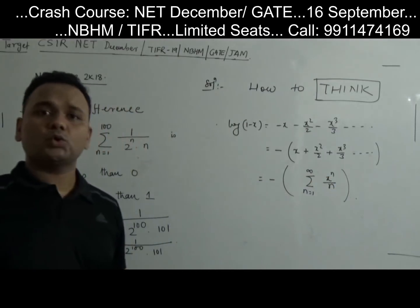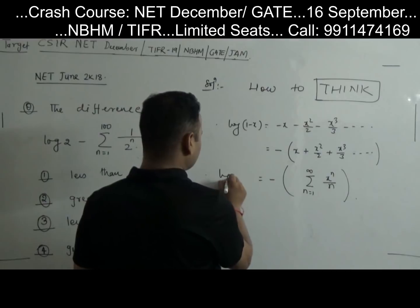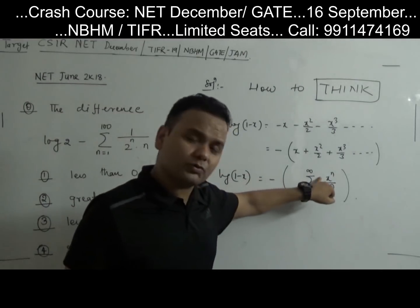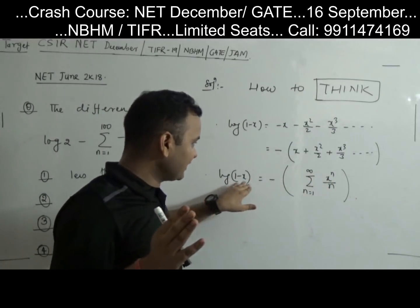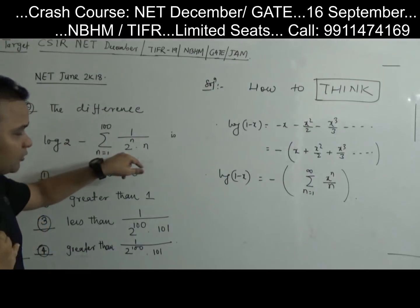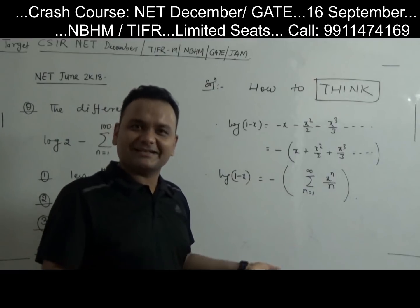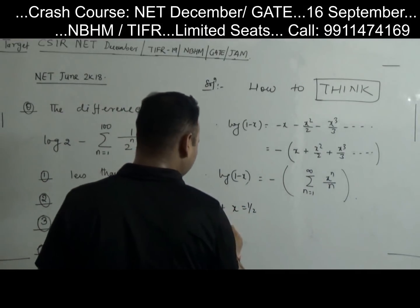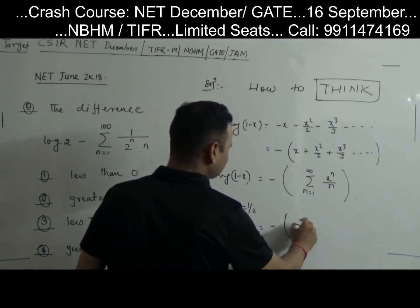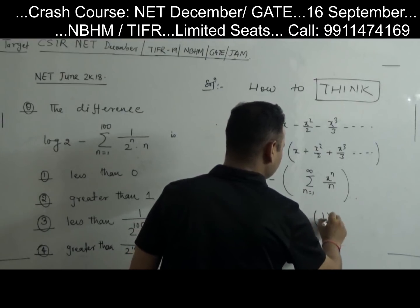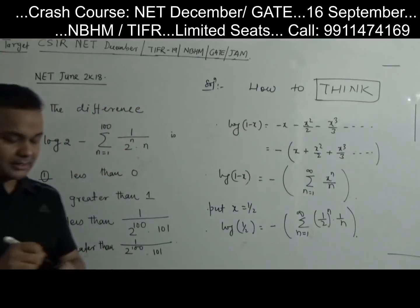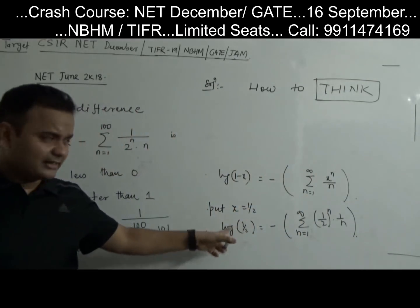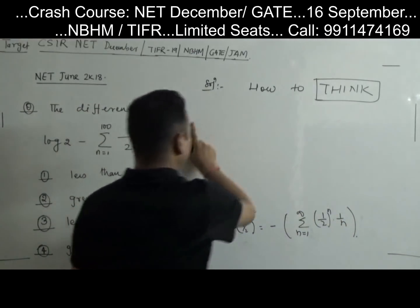So log(1−x) equals minus the sum of x^n/n, n from 1 to infinity. Now I need to go from this to log 2 using 1/2. Put x equal to 1/2. So log(1 − 1/2) equals log(1/2) equals minus the sum from n=1 to infinity of (1/2)^n times 1/n. Log(1/2) is minus log 2. So log 2 equals the sum from n=1 to infinity of 1/(2^n · n). Here is the clear pattern of how we have used it.